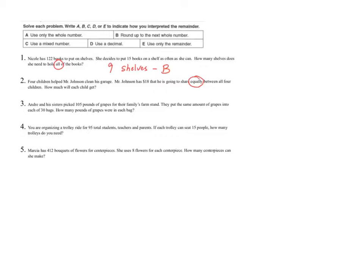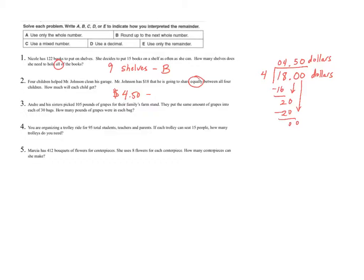This problem is asking how much money each person is getting, so my answer is going to look like money — dollars and cents, with a decimal. I'm going to make my problem look like $18.00, splitting this among four people. I'll label my dividend as dollars, and my quotient is also going to be dollars. Bringing my decimal up, I start dividing. Four does not go into 1; it goes into 18 four times. Four times four is 16. Bring down my next zero — the decimal goes straight up to indicate the one's place. Four goes into 20 five times; 5 times 4 is 20. Bring down my last zero, and four goes into zero, zero times. So I have an answer of $4.50, and I used Strategy D.